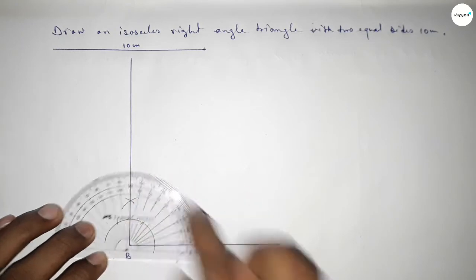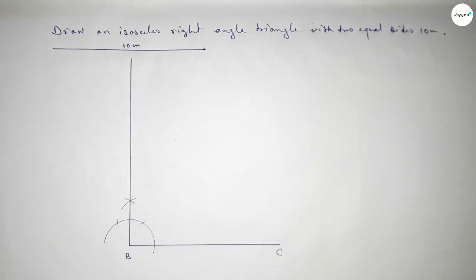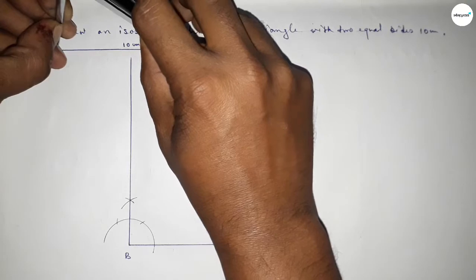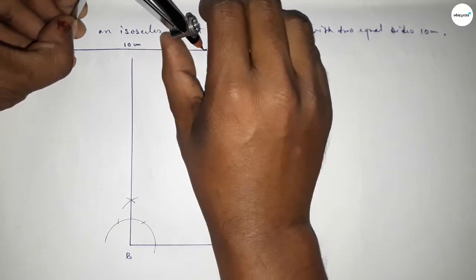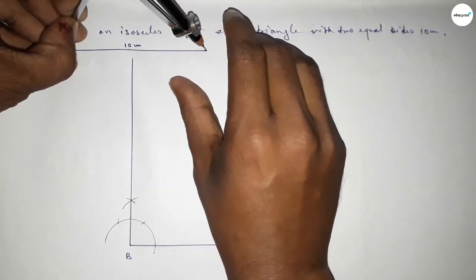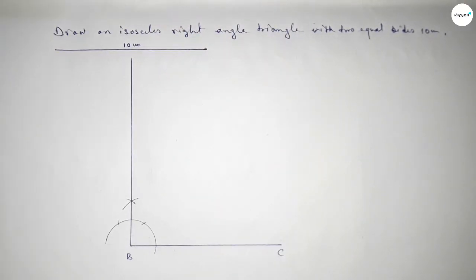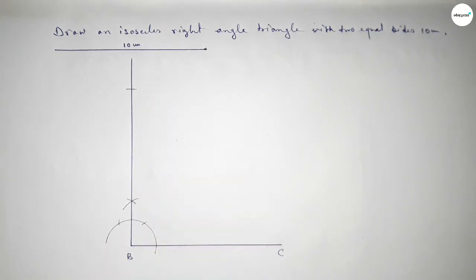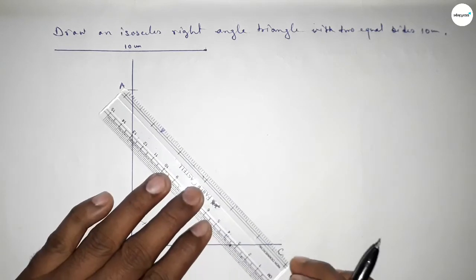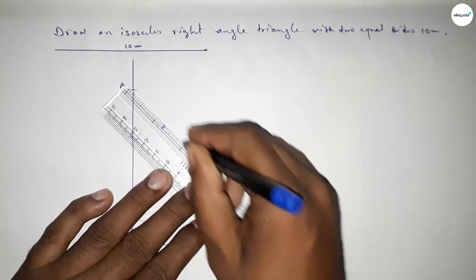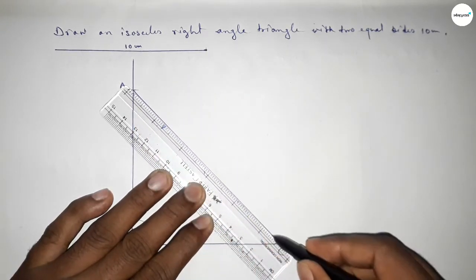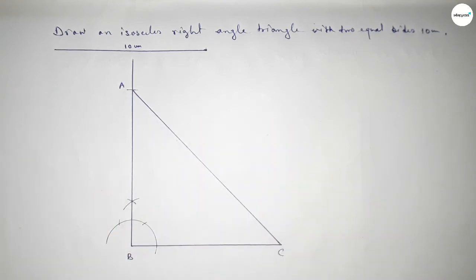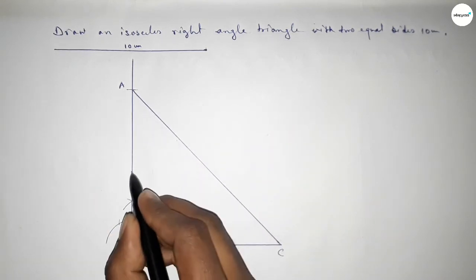Checking whether it is 90 degree or not — this is a perfectly 90 degree angle. Now taking the length 10 centimeter by using the compass and putting the compass on point B and cutting here to mark point A.